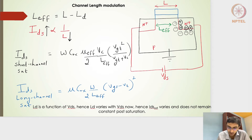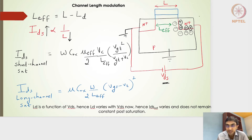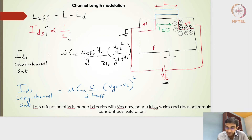If we increase the VDS value, the drain becomes more and more positive with respect to the source. Assuming the source and body are at the same potential — both grounded — the drain becoming more positive means it will attract more of the majority carriers, which in this case are electrons, towards the positive drain side.